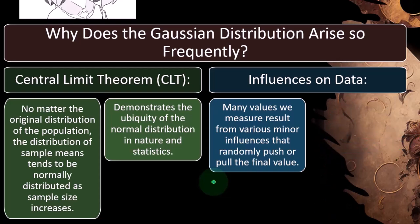That randomly push or pull the final value. So in other words, if you think, well, the bell curve has this middle point, and then these other values are kind of clustered around that middle point, and then they basically taper off to the left or the right in somewhat of a uniform fashion.